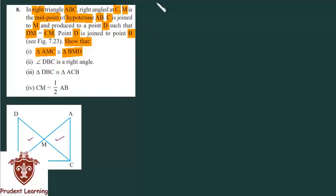It is very easy. First, these two angles are the same because they are vertically opposite angles. DM is equal to CM — this is given in the question. And M was the midpoint of hypotenuse AB, also given in the question. So if M is the midpoint, that means AM is equal to BM. In both triangles, we have one angle and two sides equal.